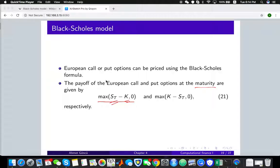On the other hand if you own a put option that means you have the right to sell the stock underlying stock at the same future time capital T from the strike price K again. The rational investor would exercise this option at the maturity only if there is a positive payoff.